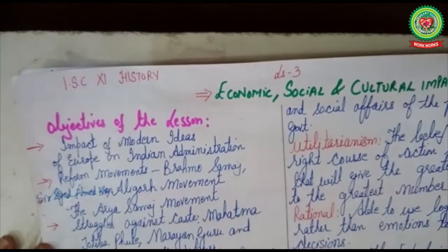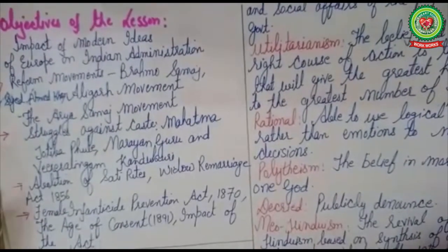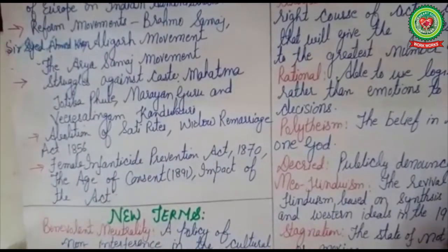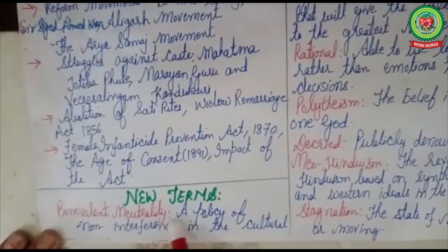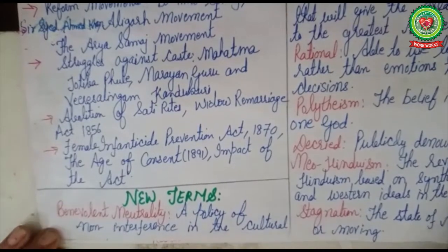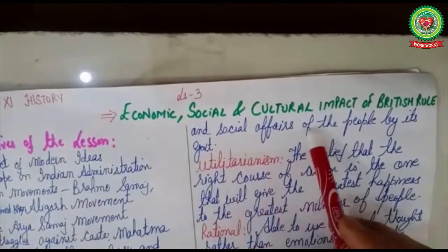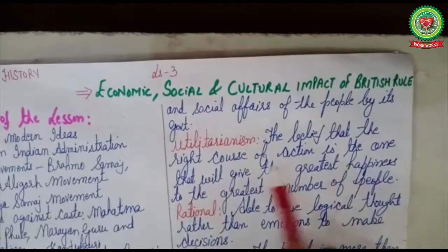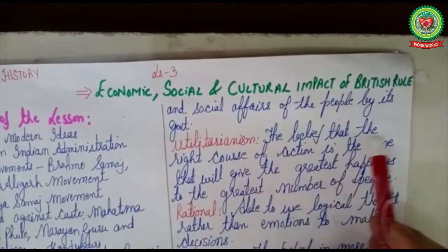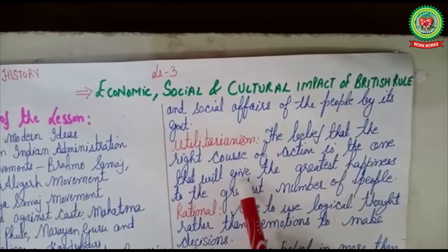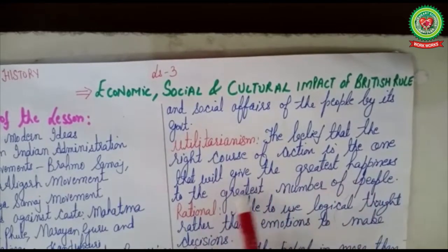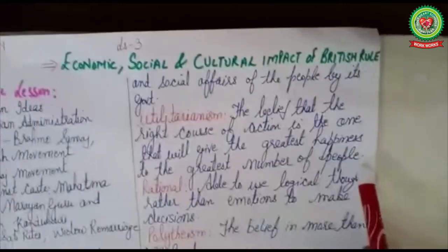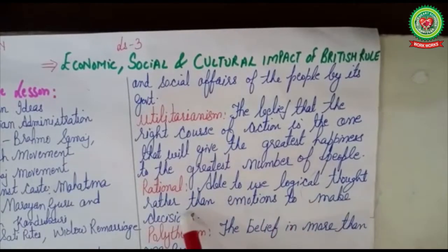Before going through our topic we will understand new terms. Benevolent neutrality: a policy of non-interference in the cultural and social affairs of the people by its government. Utilitarianism: the belief that the right course of action is the one that will give the greatest happiness to the greatest number of people. Rational: able to use logical thought rather than emotions to make decisions.